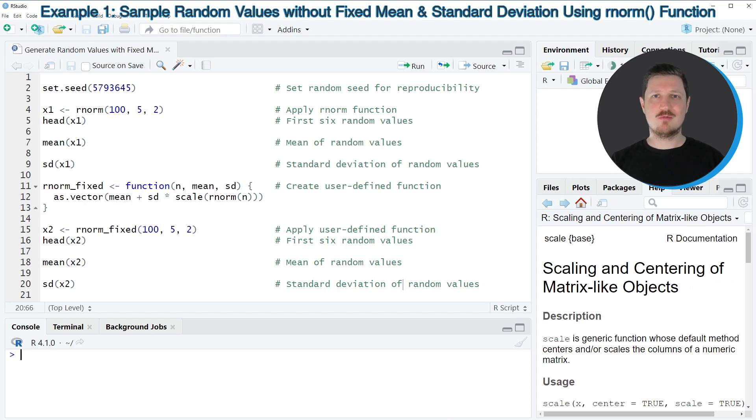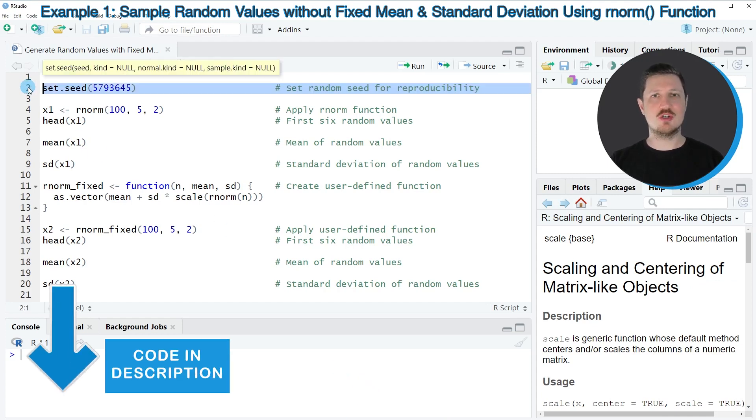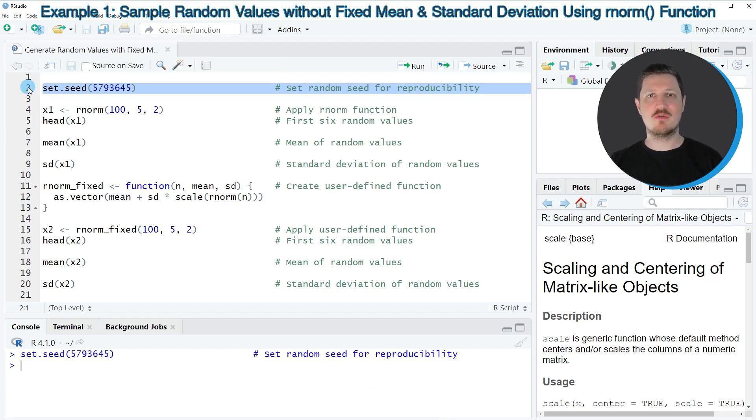In this video I will show you an example, and for this example we first need to set a random seed to ensure reproducibility of our code. So after running line 2 of the code, you can generate exactly the same random values as I do in this video.